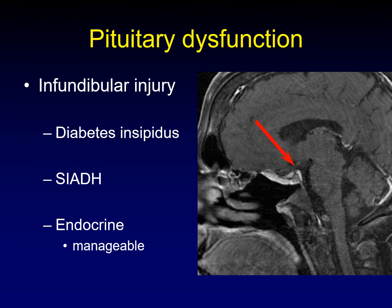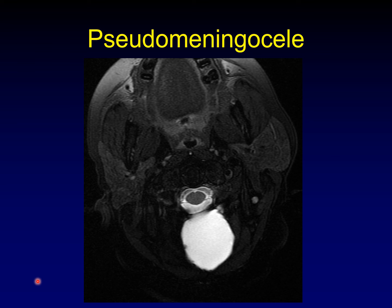Pseudomeningocele: these are common and they usually go away. Why call it a pseudomeningocele instead of a meningocele? It's a meningocele if the meninges themselves bulge out through the defect. But if the meninges get torn and CSF leaks out through the defect to be contained by the surrounding soft tissues, that is a pseudomeningocele. These are very common in posterior fossa suboccipital defects, so the size and presence of symptoms determine whether it needs to be corrected. Pseudomeningoceles that occur on anterior skull base surgeries tend to be more concerning.